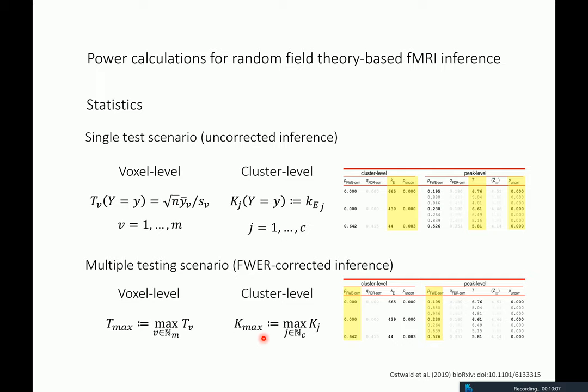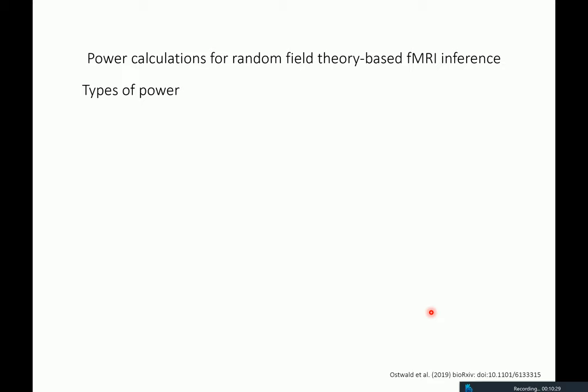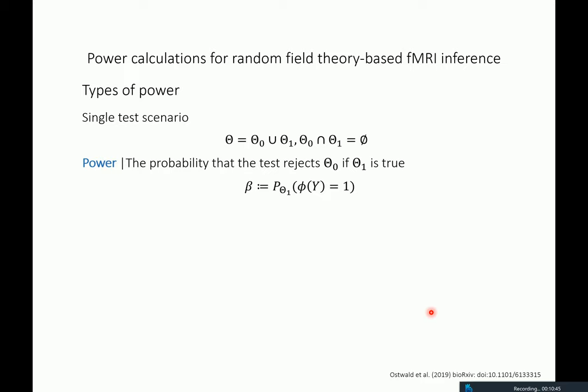The question is: what is the distribution of the maximum of all possible t-values, and what is the distribution of the maximum cluster extent over observed clusters? The distributional results for the observed data are given in the corresponding columns of the SPM table. That's basically the test we're doing based on a statistical model. Now we want to talk about power and evaluate the necessary sample size to achieve a certain level of power — which requires us to first define power. In the single test scenario, power is defined as the probability that the test rejects the null hypothesis if the alternative is true.